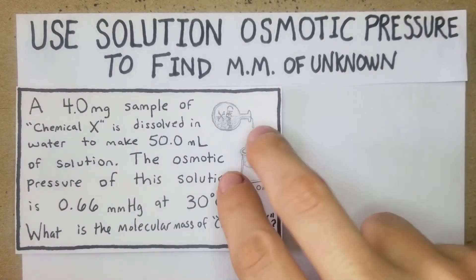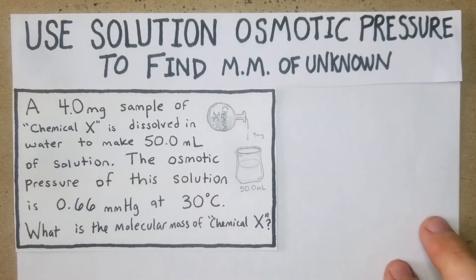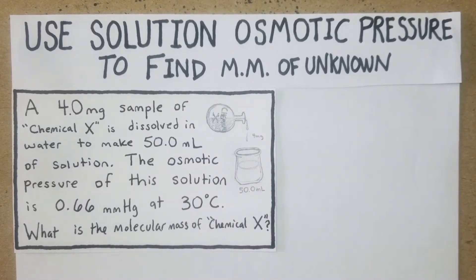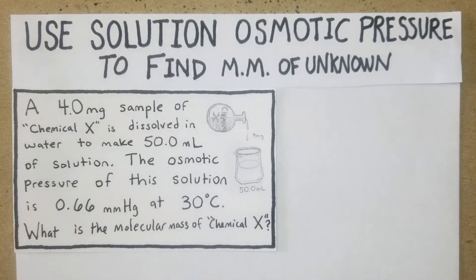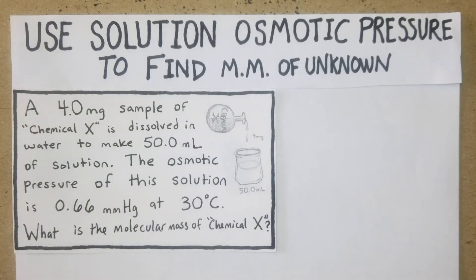A 4 milligram sample of chemical X is dissolved in water to make 50 mL of solution. The osmotic pressure of the solution is 0.66 millimeters of mercury at 30 degrees Celsius. What is the molecular mass of chemical X?